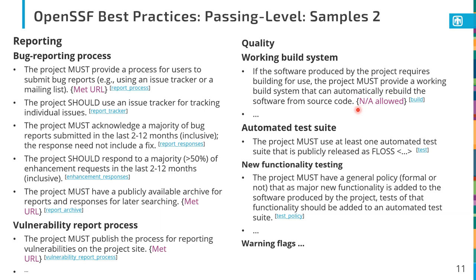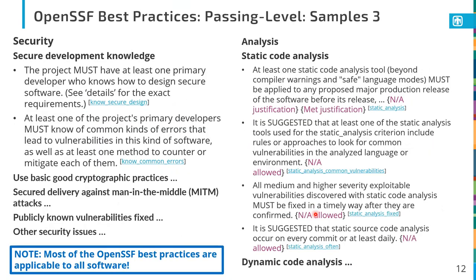On the vulnerability reporting process, your project has to provide a secure way to support reporting vulnerabilities in your software. Under quality, if your software has to be built, it's got to provide a way to automatically build it from source — you can't still be requiring manual compile commands. This can be marked as not applicable since not all software has a build process, like Python for example. The project must have at least one automated test suite that's publicly available as open source software, and there must be a general policy that new functionality gets tested.